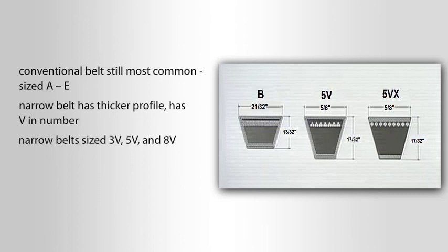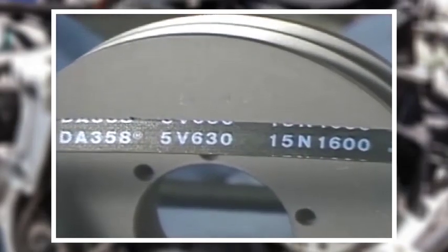Narrow belts are sized 3V, 5V, and 8V. Narrow and conventional belts are not interchangeable. In fact, the narrow belt requires a different sheave for its use.